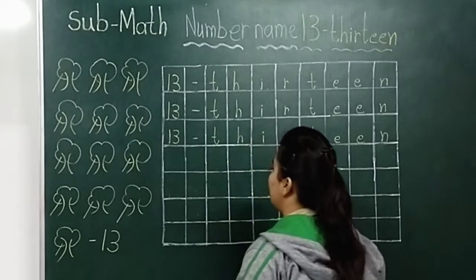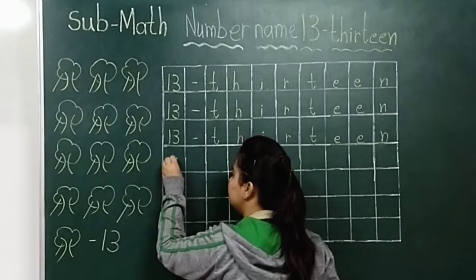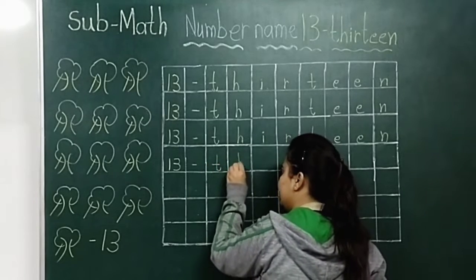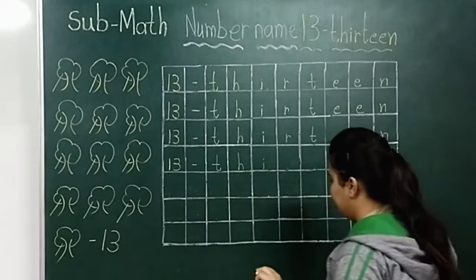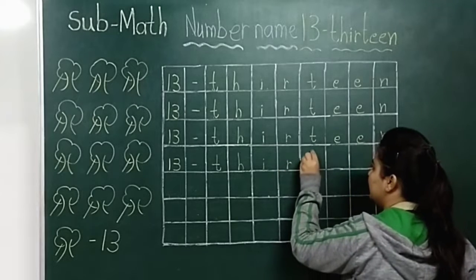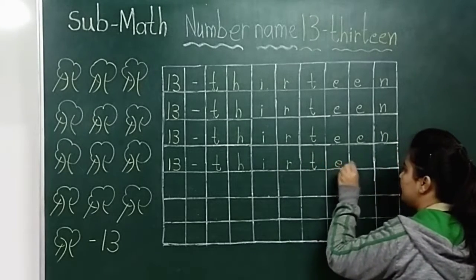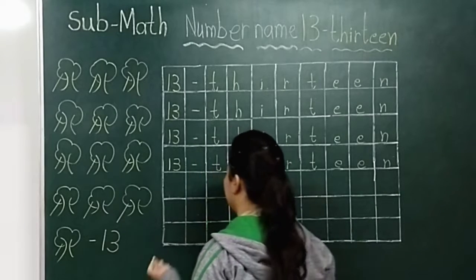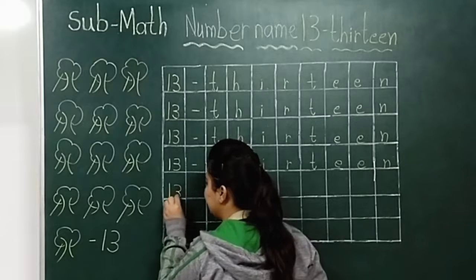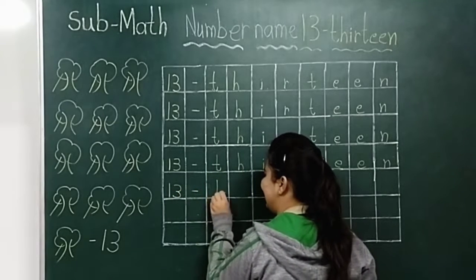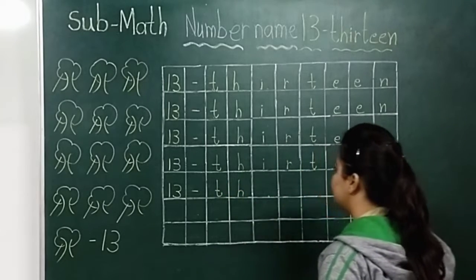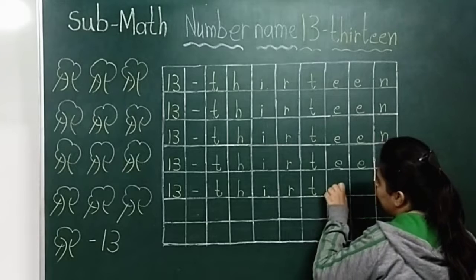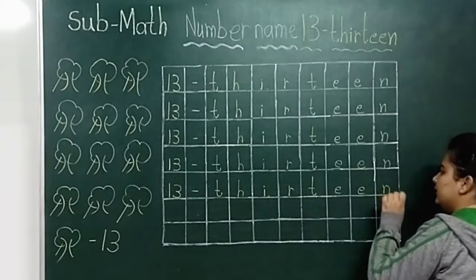Once again, look here. One, three, 13, dash — T, H, I, R, T, double E, N — thirteen. Now once again, look here. One, three, 13, dash — T, H, I, R, T, double E, N — thirteen.